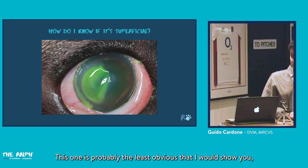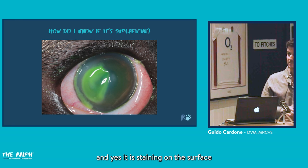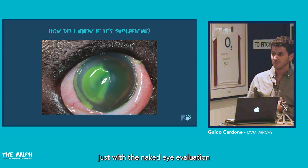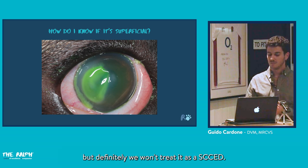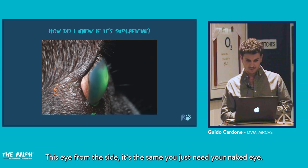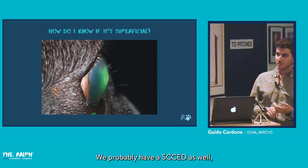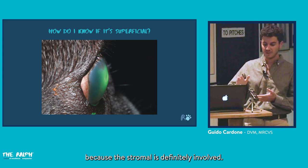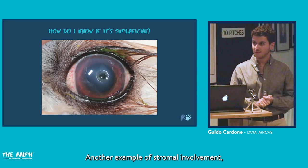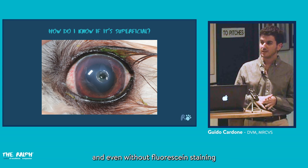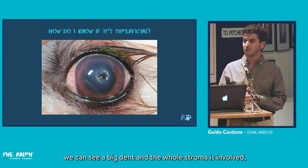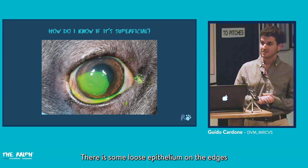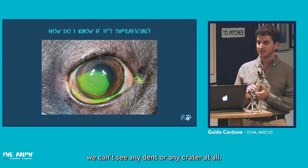To assess whether an ulcer is superficial, look for the absence of a stromal dent or crater with the naked eye. Fluorescein staining can be helpful — a superficial ulcer will stain on the surface without a visible dent. If you can see stromal involvement from the side or with fluorescein, it's not a SCED. You can use a direct ophthalmoscope or slit lamp using the slit function to focus on the different corneal layers to confirm depth.